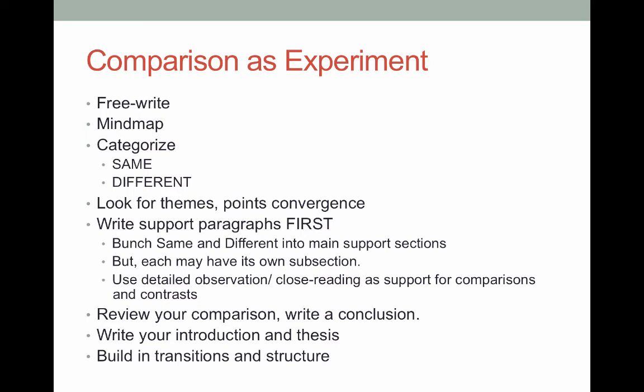Then you want to start getting some structure in there — start categorizing. What are the things that came up that are kind of the same? What are the points of similarity, the points of comparison between the game you selected and the works of literature we've done so far? Where are the places where they're different, where they're diverging, where there seems to be something completely different going on? Within those categories, you want to look for overlapping themes. Basically try to take a step up and organize within the detailed comparisons you've come up with — find the main topics of comparison and contrast.